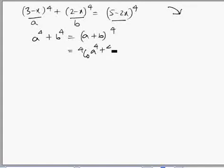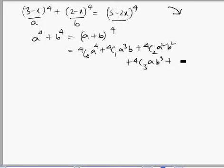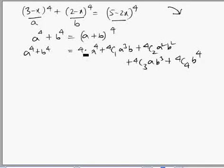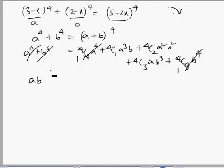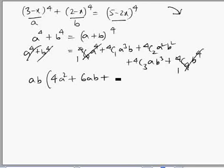We can expand (a + b)⁴ using the binomial expression: ⁴C₀·a⁴ + ⁴C₁·a³·b + ⁴C₂·a²·b² + ⁴C₃·a·b³ + ⁴C₄·b⁴. We can then cancel terms: ⁴C₀ is 1 and ⁴C₄ is also 1, so we cancel those two terms, and from the remaining terms we take 'ab' as a common factor.